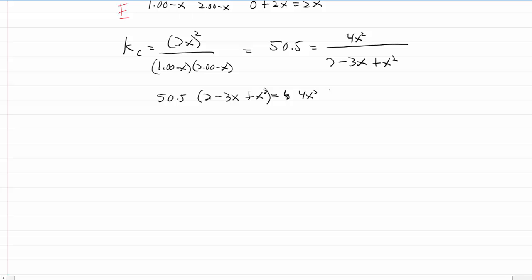And multiply that out. I'm going to get 101 minus 151.5X plus 50.5X squared. That all equals 4X squared. Subtract 4X squared from both sides. I'm setting this equal to 0 to get ready to use the quadratic. I'm going to move things around so I get 46.5X squared in the first position, minus 151.5X plus 101. And this gives me my A, B, and C for the quadratic equation.